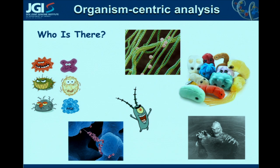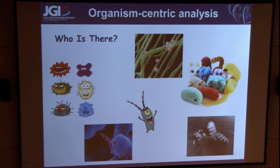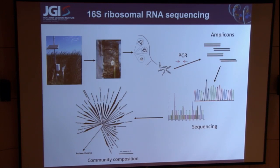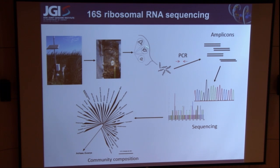Starting at the most basic level, the most fundamental question for most microbial ecologists is simply: who is there? They look into a sample and want to see what kinds of organisms live there. The most conventional way of doing that with DNA sequencing is sequencing the 16S ribosomal RNA gene. This is actually a picture of the wetlands I study in my research — a sediment core. You isolate DNA, amplify the 16S gene with primers to conserved regions in the molecule, take your amplicons and sequence them with whatever technology you want, and then you can build a phylogenetic tree to see who is there.